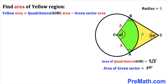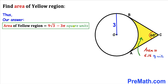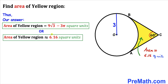Here's our final step. The area of the yellow shaded region equals the area of quadrilateral AOBC minus the green sector area. Filling in the values: yellow area = 9√3 − 3π. Thus, the area of the yellow shaded region is 9√3 − 3π square units, which is approximately equal to 6.16 square units.